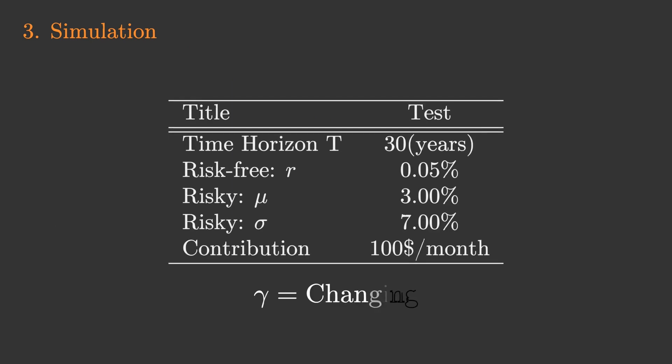Let's run a 30-year period simulation using the solution we have obtained. We assume a 0.05% yield on the risk-free asset, a 3% yield on the risky asset, a 7% volatility on the risky asset, and a monthly contribution of $100. Three patterns of risk appetite gamma are prepared.